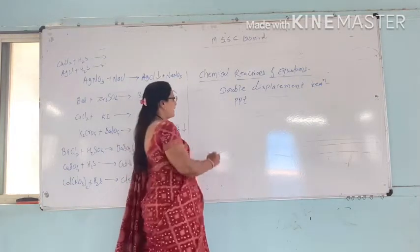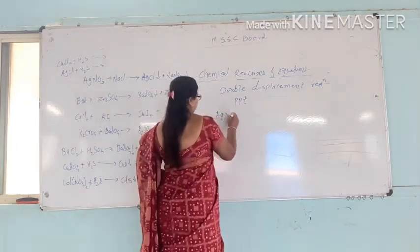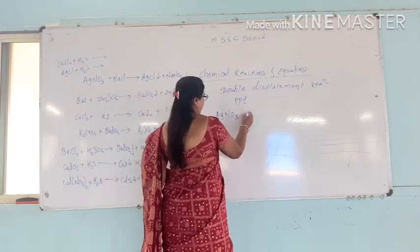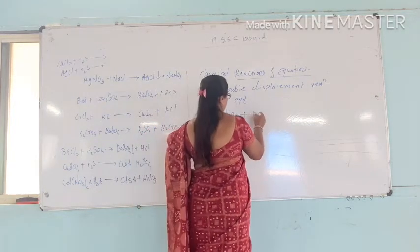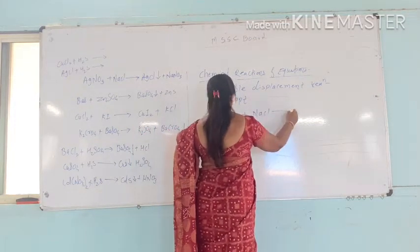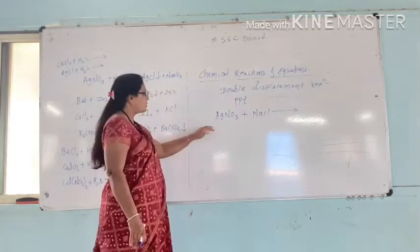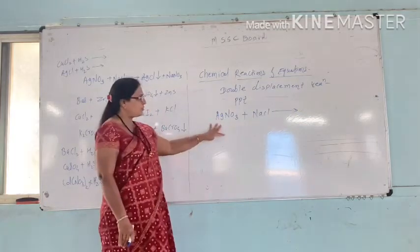For example, silver nitrate reacts with sodium chloride. In this type of reaction there is an exchange of ions of the reactants.